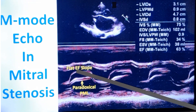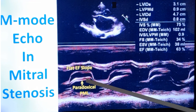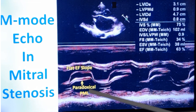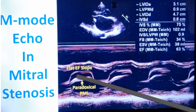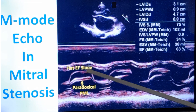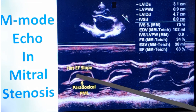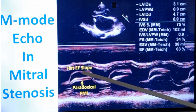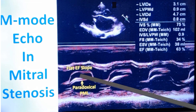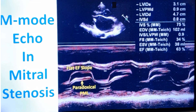Normally the EF slope should be downwards, followed by an A wave. Here, there is no A wave, and the EF slope is flat — almost a horizontal slope — whereas normally you would expect it to slope downwards in early diastole.